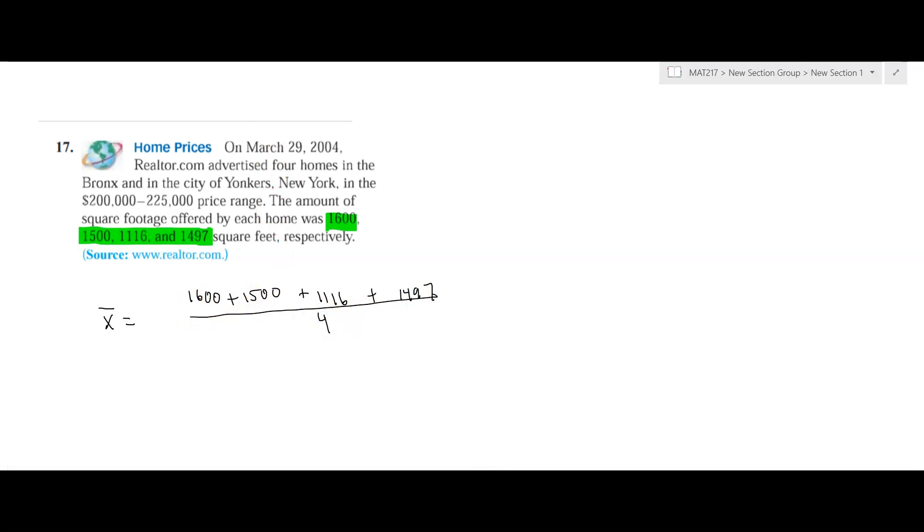Now, our units on the top is square feet, so we're adding square footage together. And 4, we could sort of think about that as the number of houses. So our units of the mean are going to be square foot per house. Or another way to say that is if all the houses have the same square footage, this particular number would be that number.